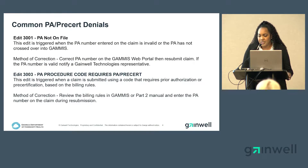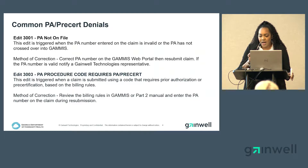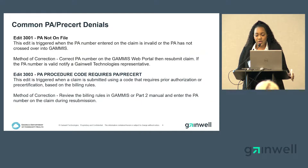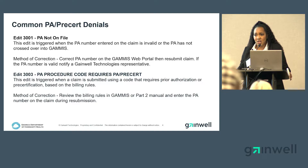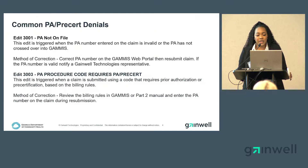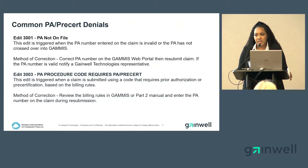The first common PA and pre-cert denial is edit 3001: PA is not on file. This edit is triggered when the PA number entered on the claim is invalid, or it simply hasn't crossed over into the GAMIS system yet. To correct this, verify the PA number on the claim — double-check, triple-check it, as it may be off by a digit. Correct it, then resubmit the claim on the GAMIS web portal. If the PA is valid and you are still receiving a denial, reach out to your provider rep by submitting a contact us ticket on the GAMIS website.